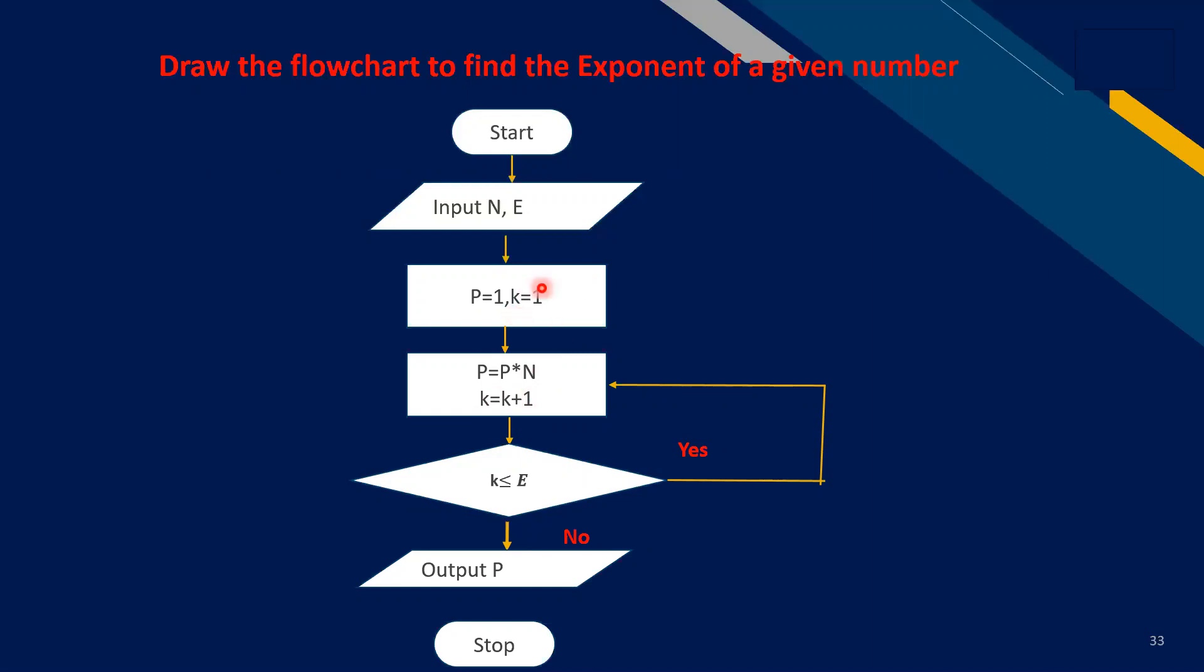The first time k equals 1, and now 1 plus 1 equals 2. Now the value of k is 2. 2 is less than e, yes, so the loop will be continued.